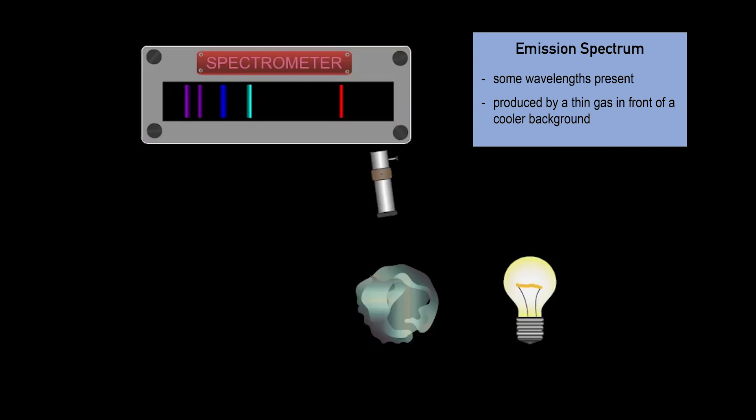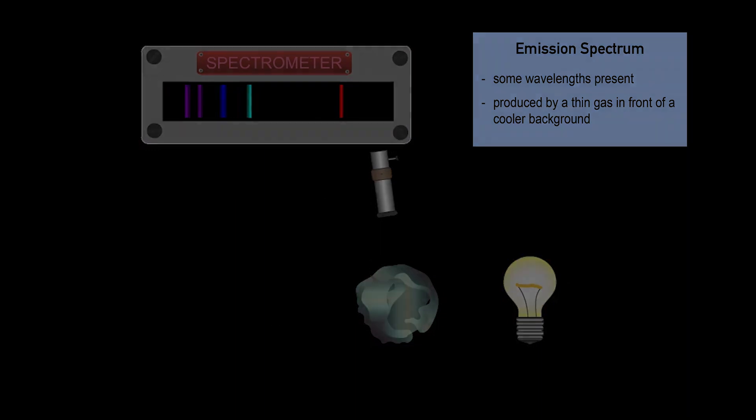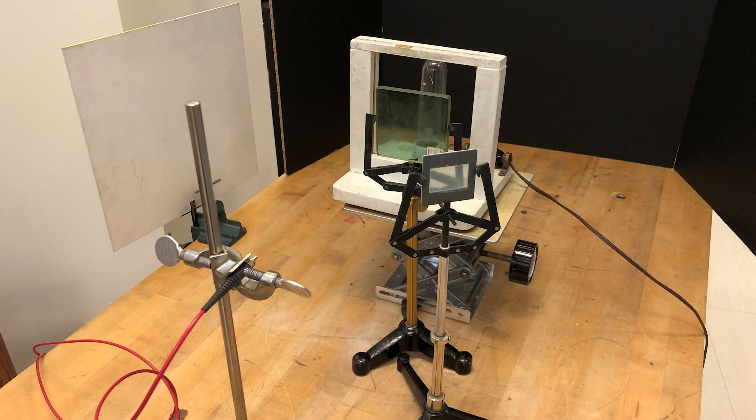We observe this around the sun when the surface is obscured, as occurs in a solar eclipse. Let's explore this with demonstration equipment, both visually and graphing spectra on the computer screen.